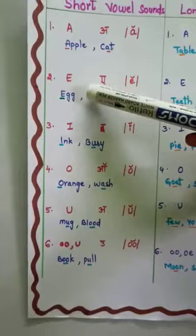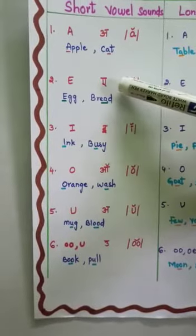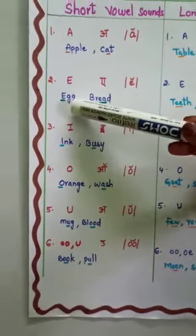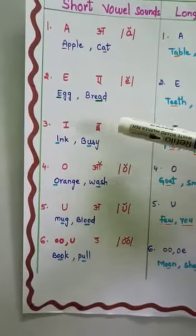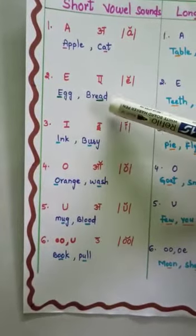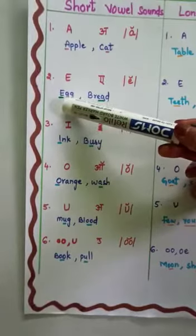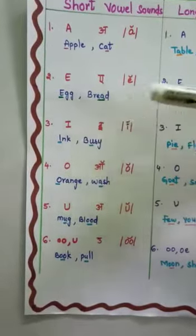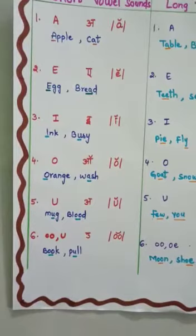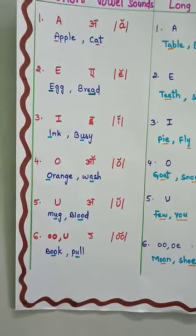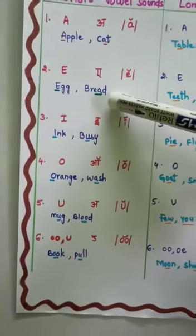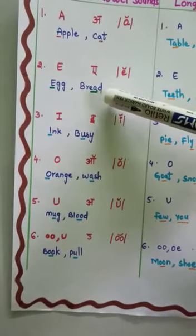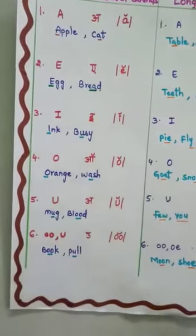Next comes E. E makes the sound /ɛ/. Examples: egg and bread. Egg makes the sound /ɛ/ — egg. And here, E also makes the /ɛ/ sound — bread. Understood, children?